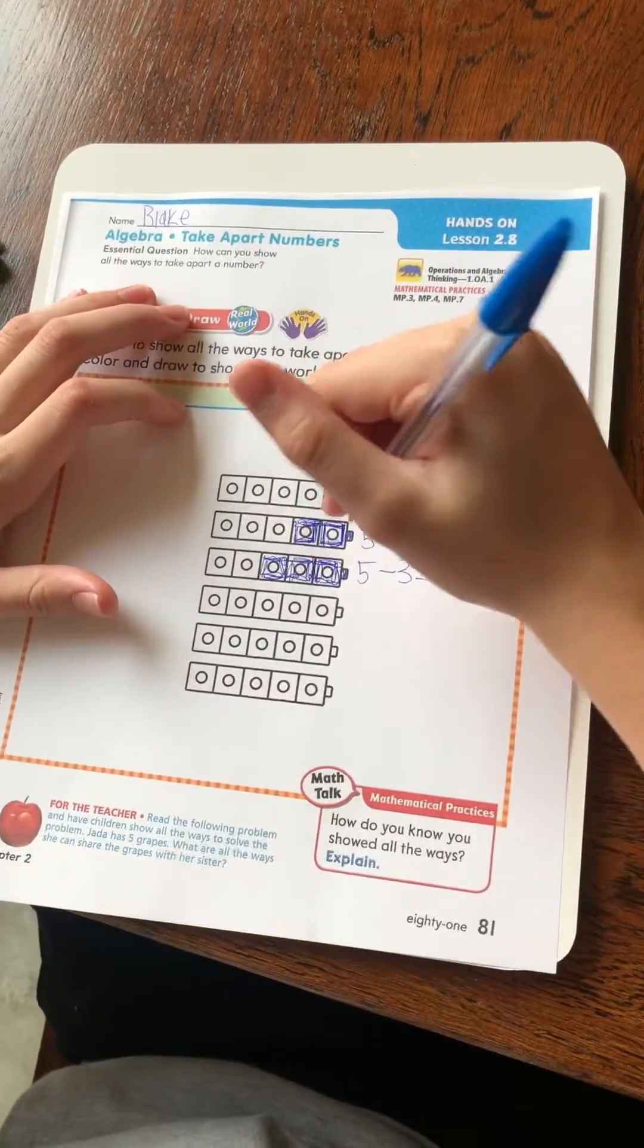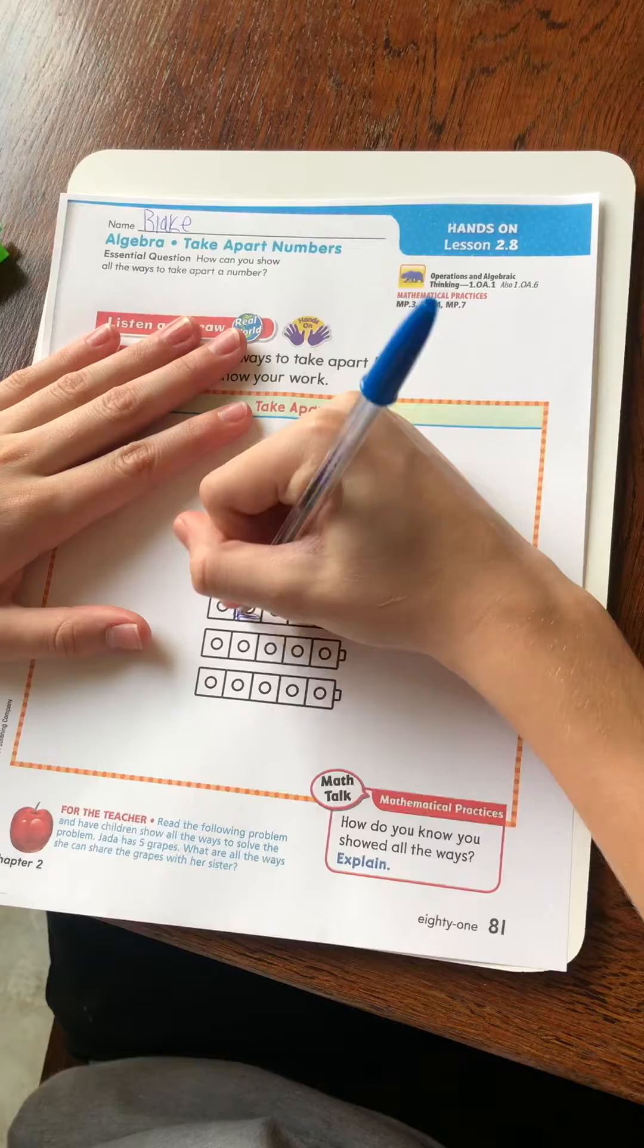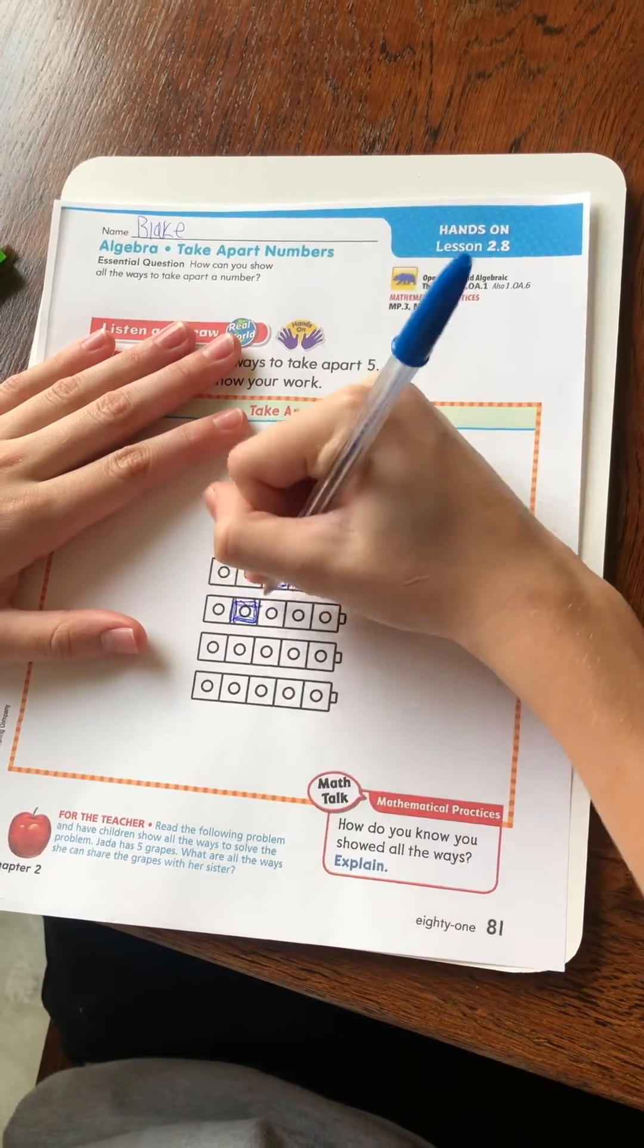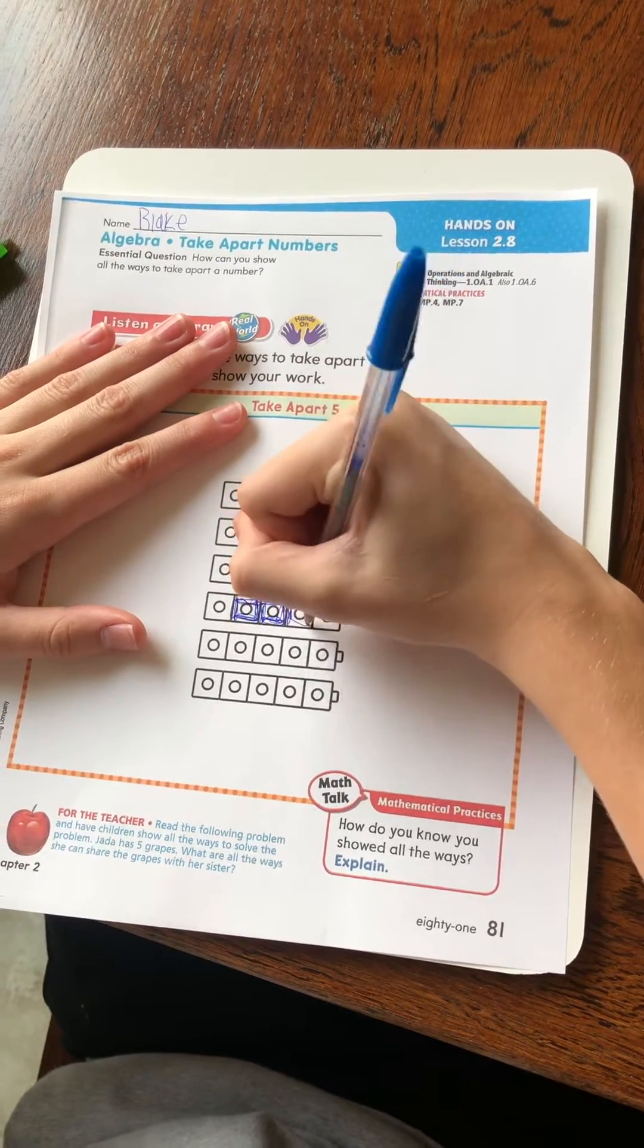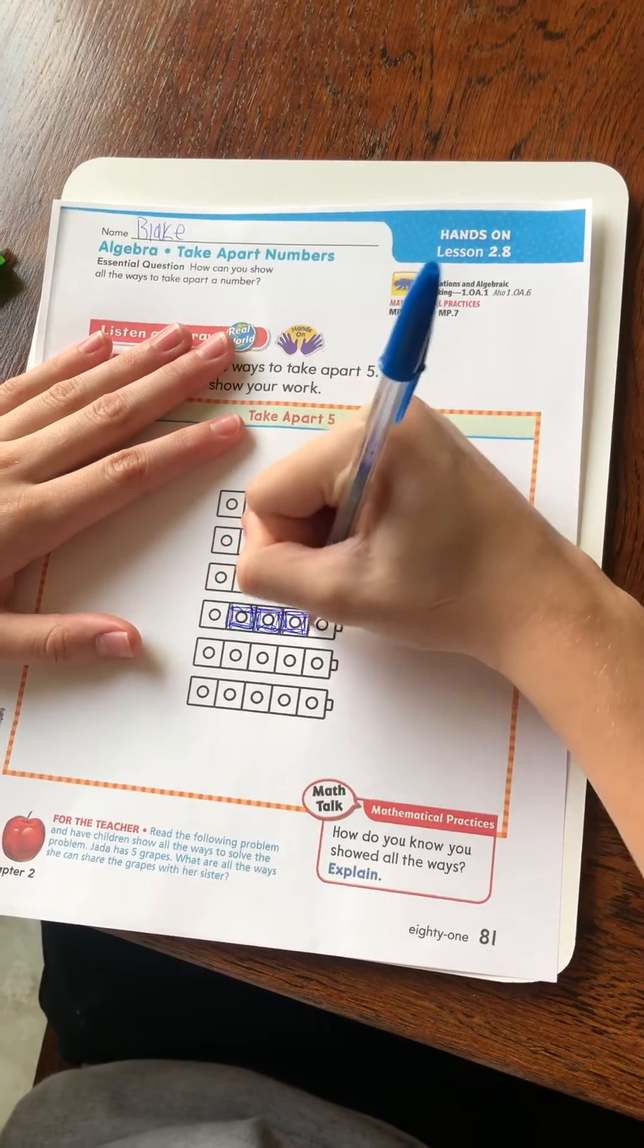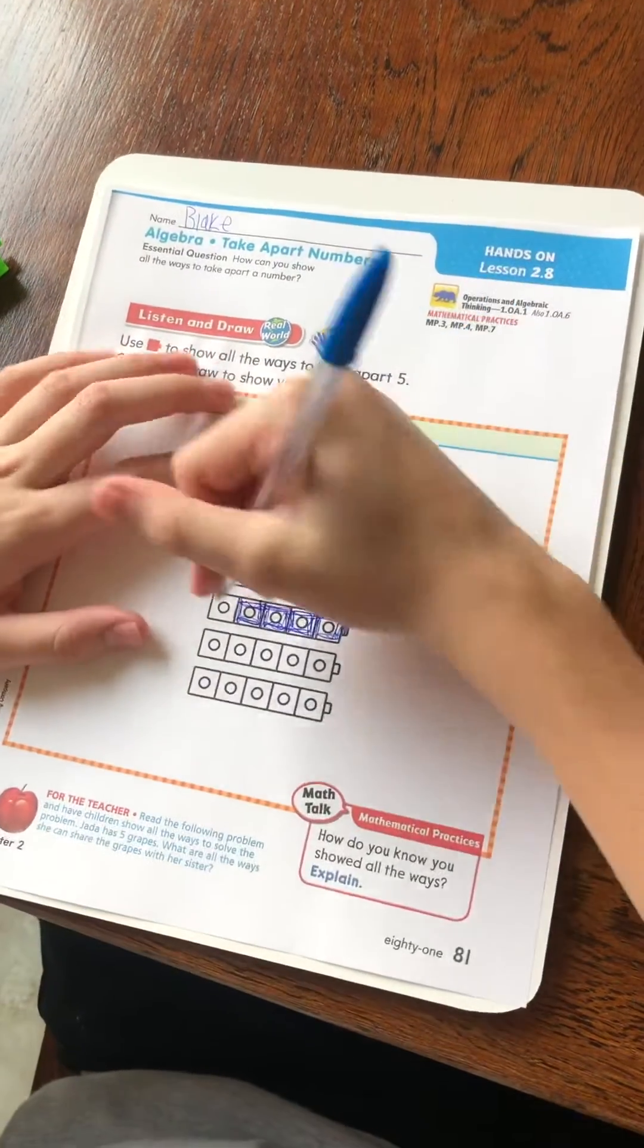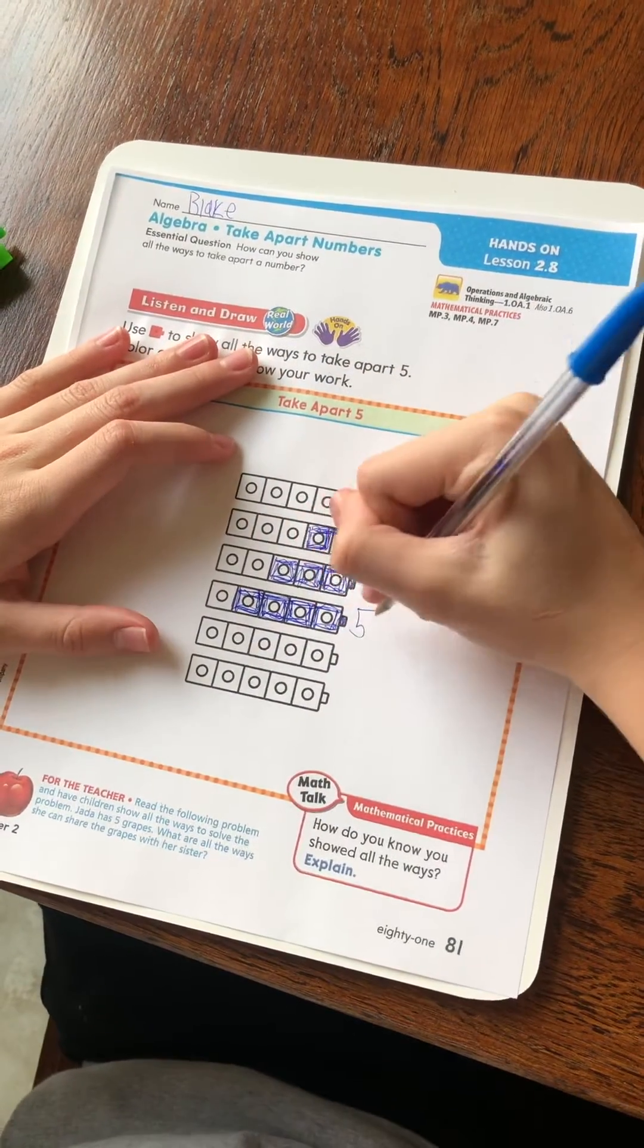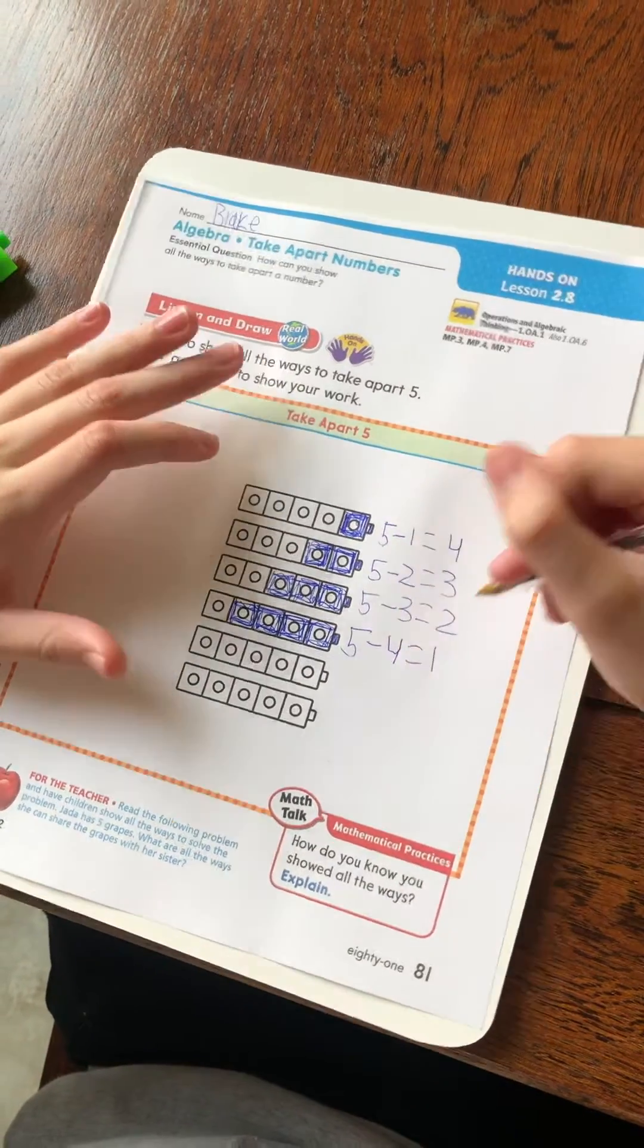So, let's color in four. Okay. So, it would be one, two, three, four, five, minus four equals one. Okay.